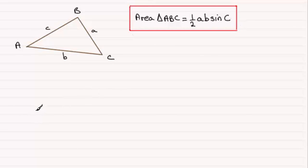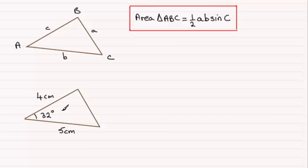So it's a very easy formula to work with. If you had a triangle, let's say we have one something like this, where that side here is say 4cm, this one here is 5cm, and the included angle is say 32 degrees. We don't have to label the triangle ABC, all we need is two sides and the included angle.